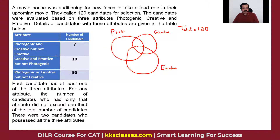Looking at the data in the table: photogenic and creative but not emotive. So photogenic and creative, but outside the circle of emotive — we're talking about this area, which is 7. So they are photogenic and creative, but they're outside the circle of emotive.